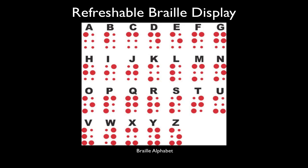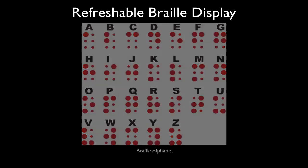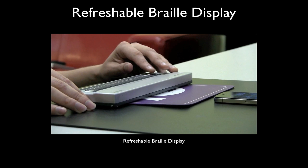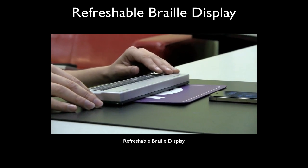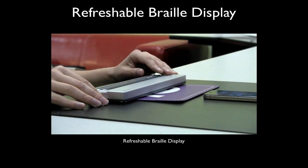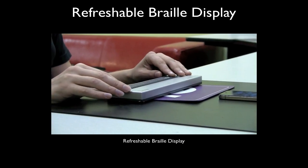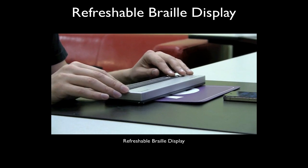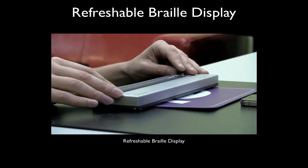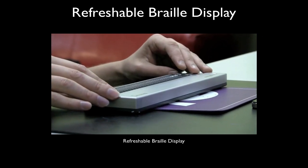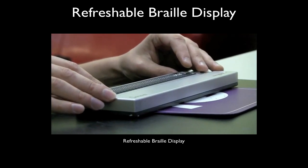Braille is the alphabet used by blind people that is composed of several dots, and these dots shape certain letters. You don't need to be concerned about the letters and the dots at this point. What you want to see is how the dots actually move on the Braille Display, because it's going to become very important.